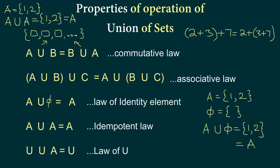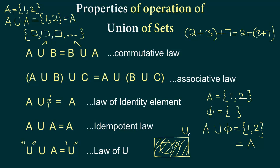The final property is the law of universal set: U union A equals U. From a Venn diagram standpoint, if we draw a rectangle for the universal set and a circle inside for set A, taking the union means writing all elements of A and all elements of U. The resulting set covers the entire rectangle, which is nothing but the universal set.